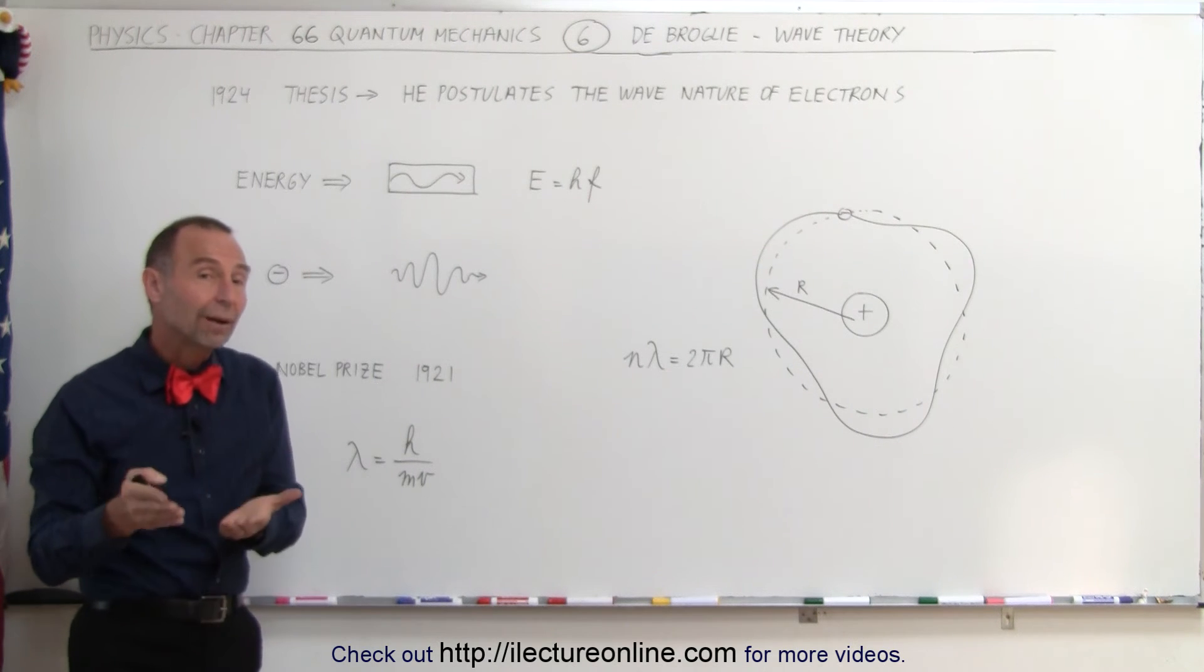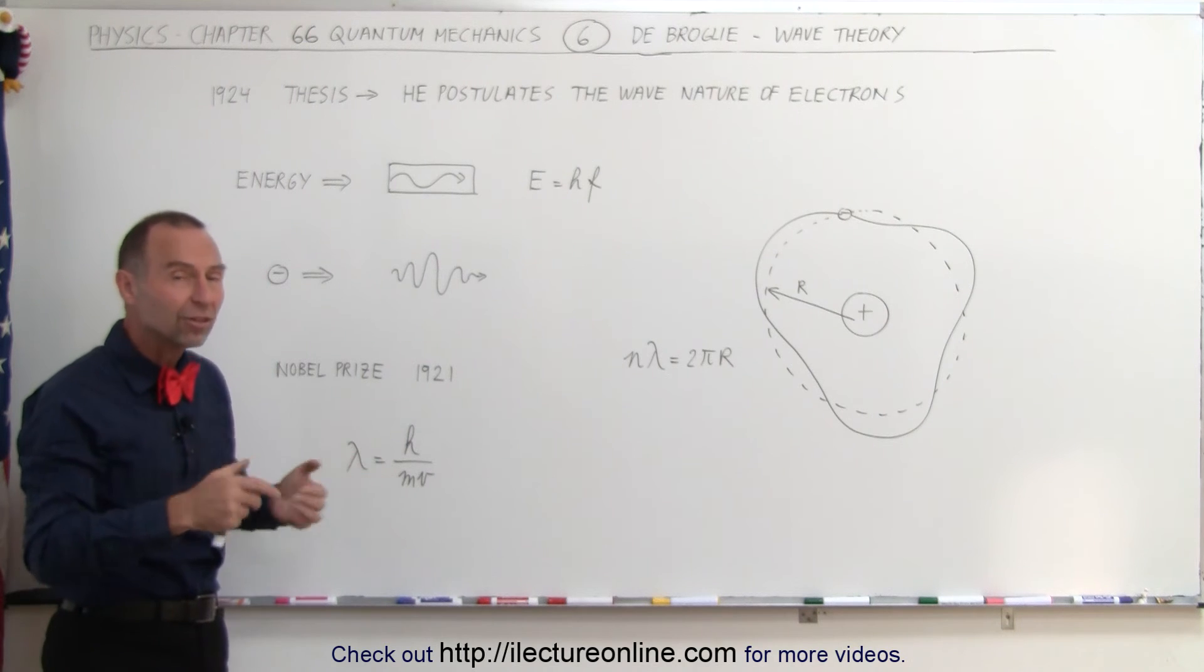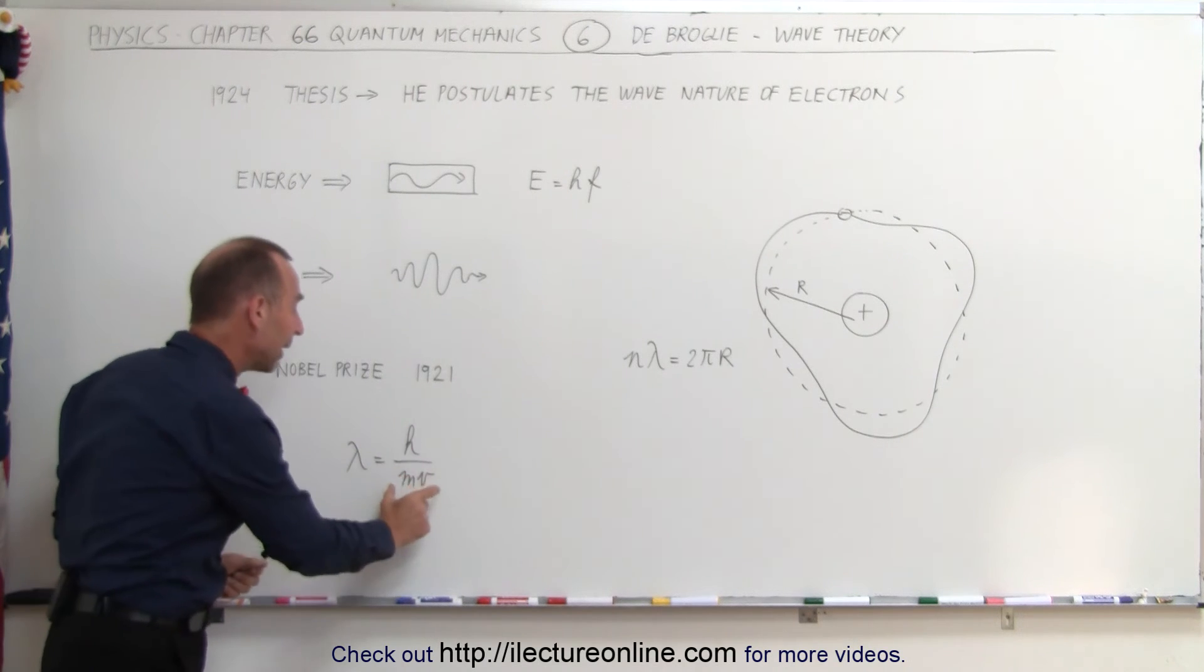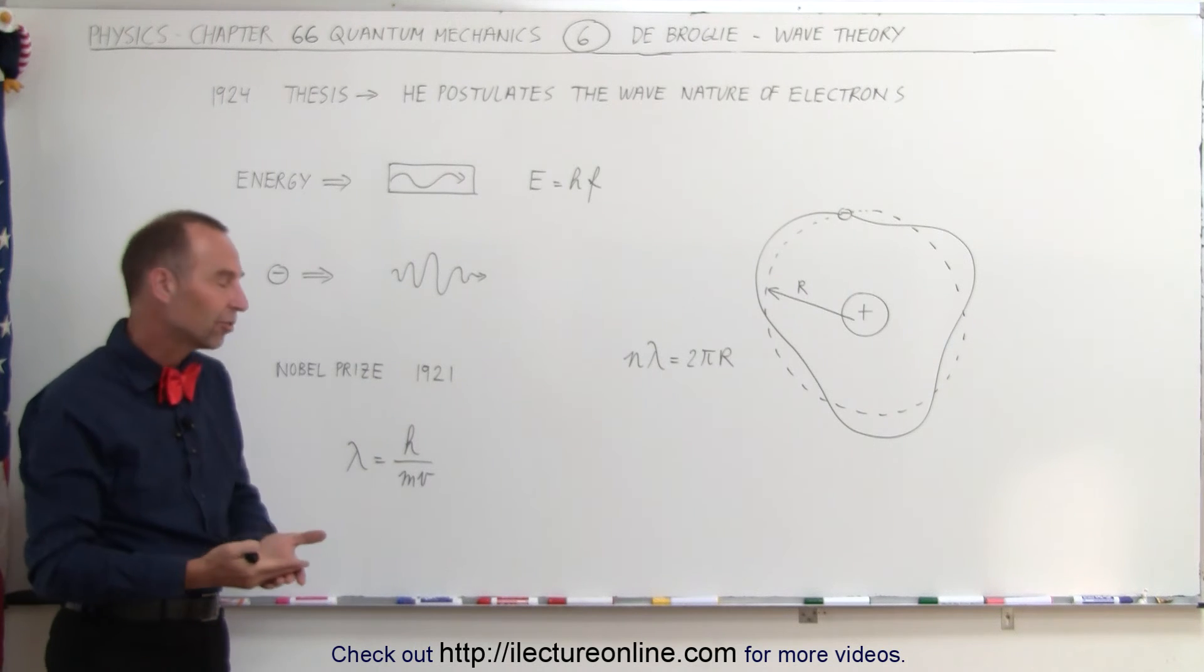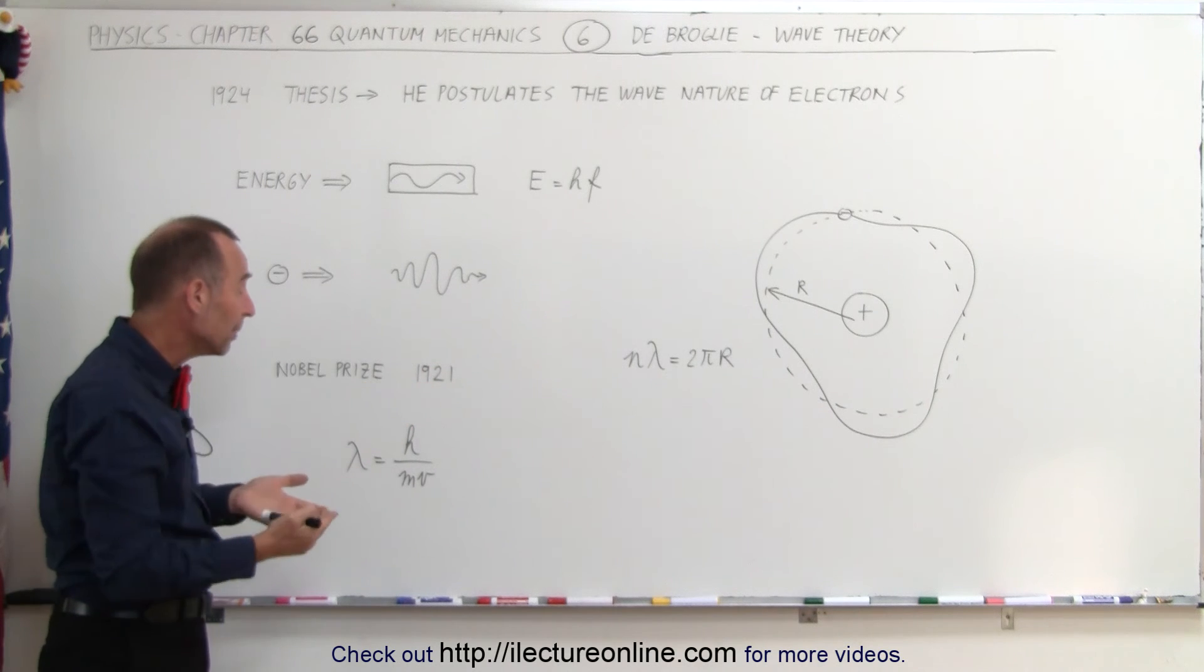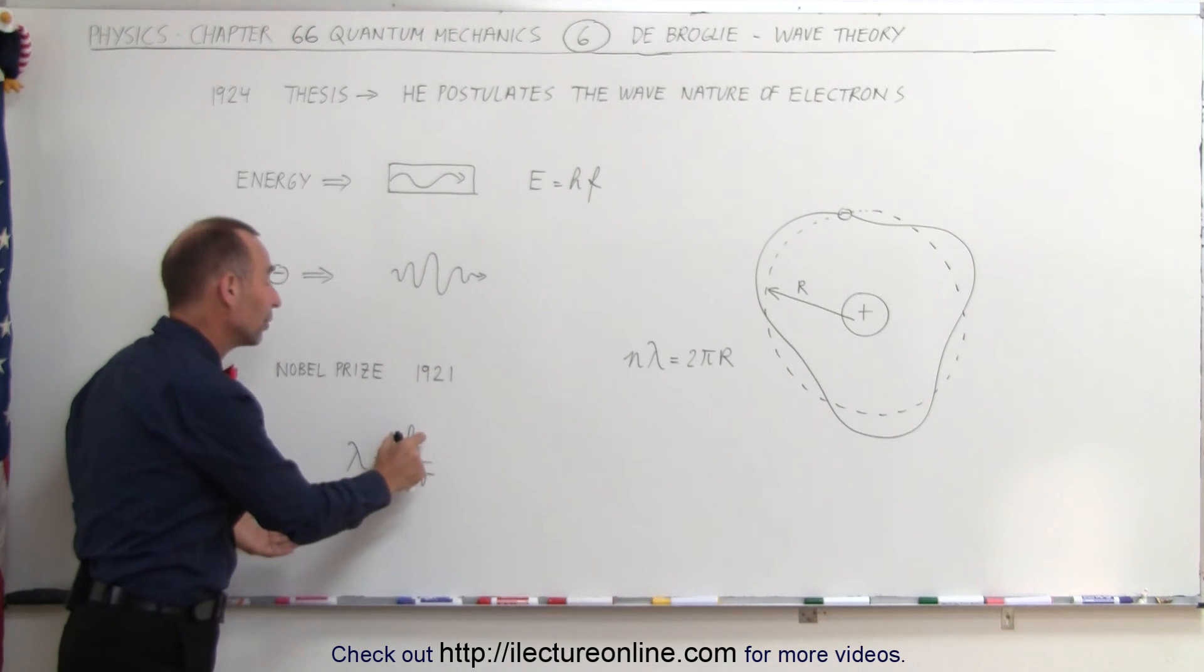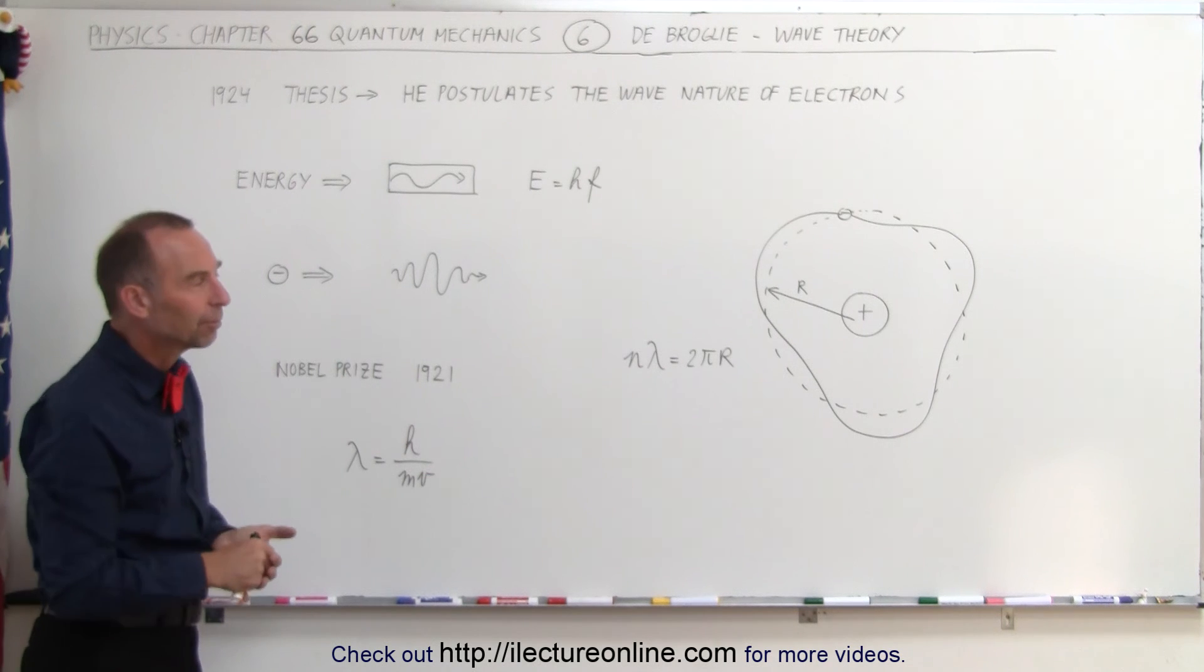Ultimately, the equation describing the wavelength of a small particle was equal to, again, Planck's constant—there's that constant again—divided by the momentum of that particle. The momentum, of course, would be the mass times the velocity. So the wavelength of a small particle like an electron in orbit around the nucleus of an atom can then be described as λ = h/(mv).